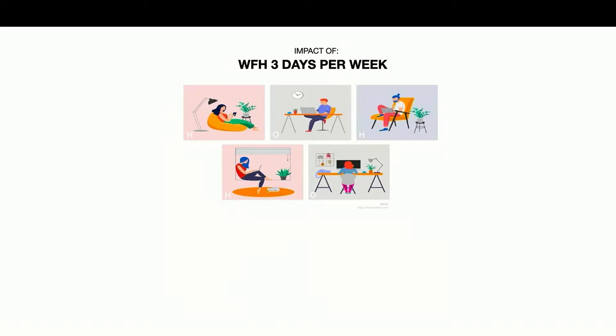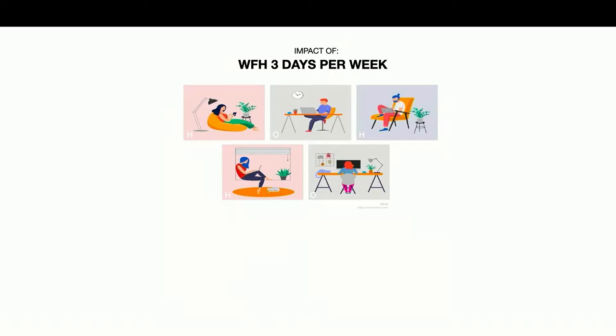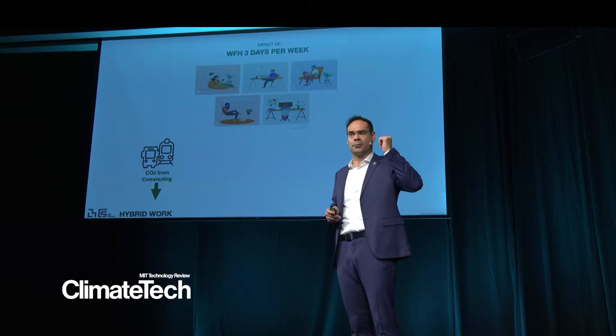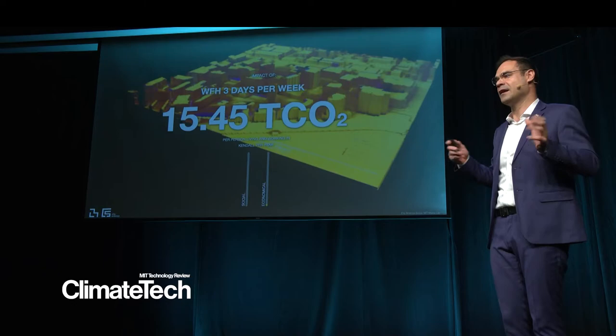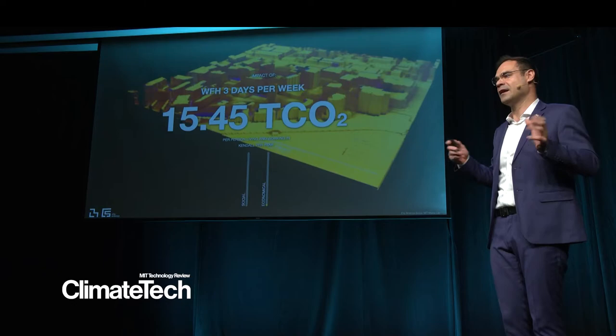Let's take three days per week and implement a policy in Kendall Square where everyone living and working there teleworks three days per week. We will reduce CO2 from commuting and reduce operational CO2 in the office, but we will increase the operational CO2 in the home. If we balance all of this, we get a reduction of 0.05 tons of CO2 per person living and working in Kendall Square per year. However, the social and economic impacts are not going to be very significant.